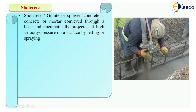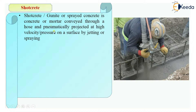Shotcrete is concrete or mortar which is conveyed through a hose pipe. See in this picture, this is a hose pipe from which it is conveyed pneumatically, meaning with the help of air pressure, and projected at high velocity or pressure. It is projected over the surface by high pressure or velocity by jetting or spraying action. This spraying of concrete over the surface through pipes is called shotcrete or gunite.